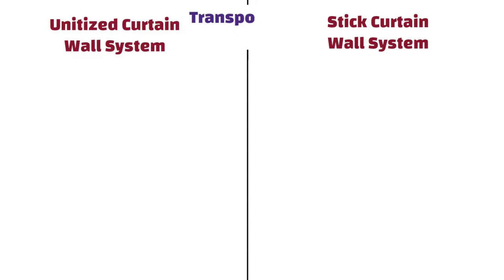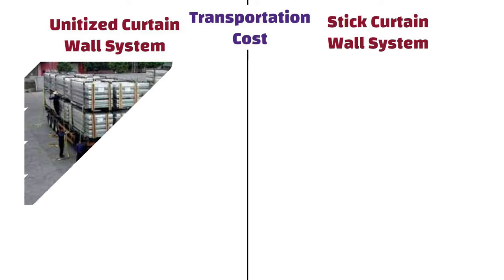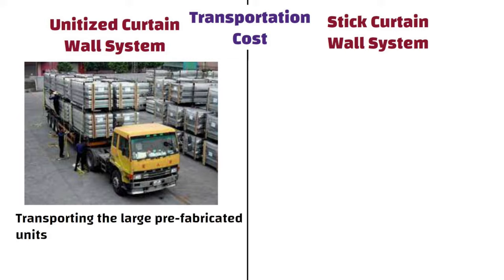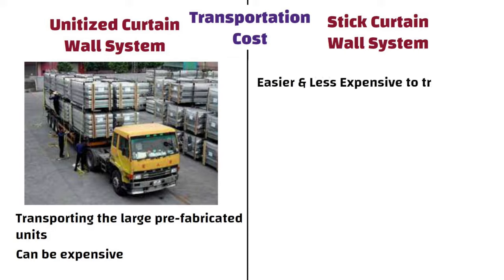Transportation Cost: In the case of a unitized system, transporting the large prefabricated units to the construction site can be expensive. While the stick curtain wall system is easier and less expensive to transport because its parts are smaller.